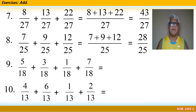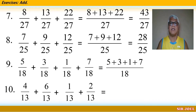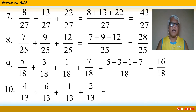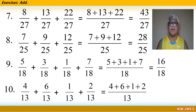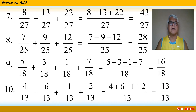Number 9: 5 over 18 plus 3 over 18 plus 1 over 18 plus 7 over 18. Copy the denominator 18, then find the sum of 5, 3, 1, and 7 to get 16 over 18. And last, Number 10: 4 over 13 plus 6 over 13 plus 1 over 13 plus 1 over 13 plus 2 over 13. Copy the denominator 13 and add 4, 6, 1, 1, and 2 to get 13 over 13.